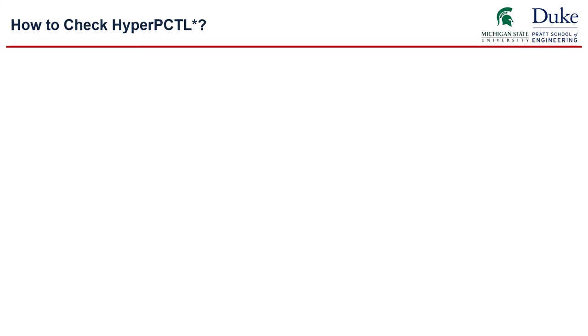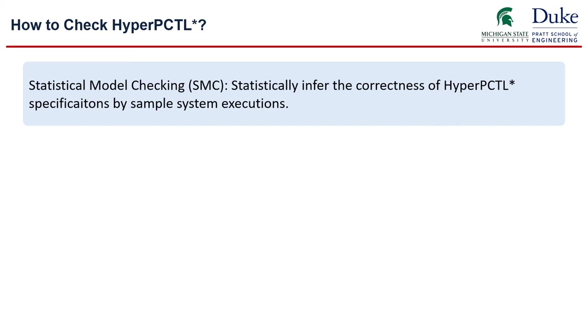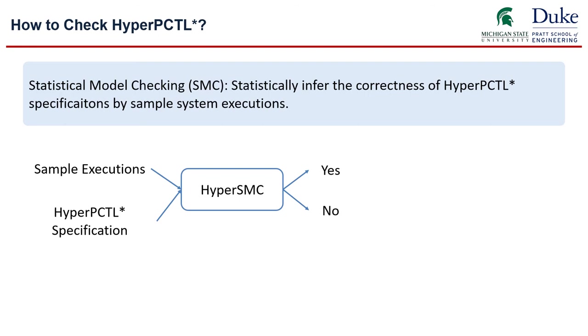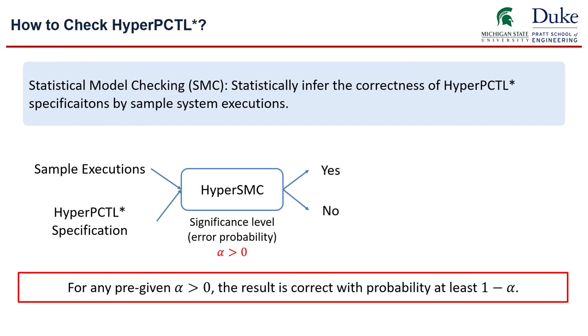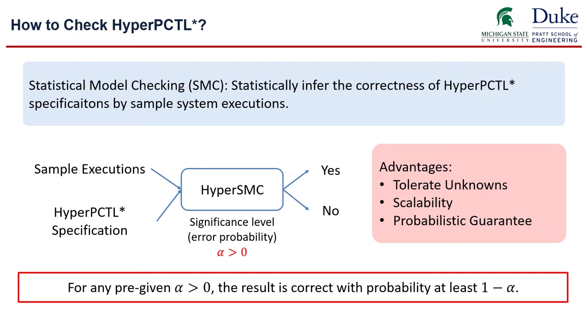Moving on, I'm going to introduce how to check hyper PCTL specifications that capture information flow security properties. The technique we use here is called statistical model checking. Specifically, it infers the correctness of a hyper PCTL star specification by sampling from the underlying probabilistic system. We developed a new statistical model checker called hyper SMC that can verify general hyper PCTL star specifications using system samples. Since hyper SMC is based on statistical inference, it is possible that it will return a wrong answer. But here, our guarantee is that for any given parameter significance level alpha, which is greater than zero, hyper SMC can smartly decide how many samples to take and guarantees that the return result is correct with probability at least one minus alpha.